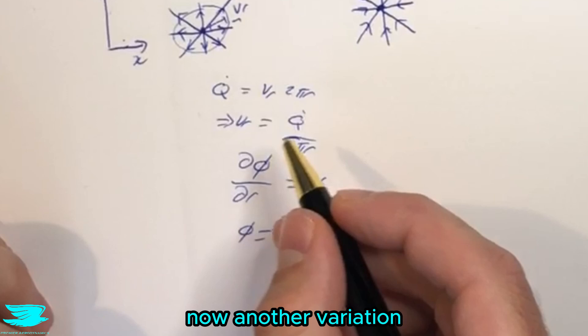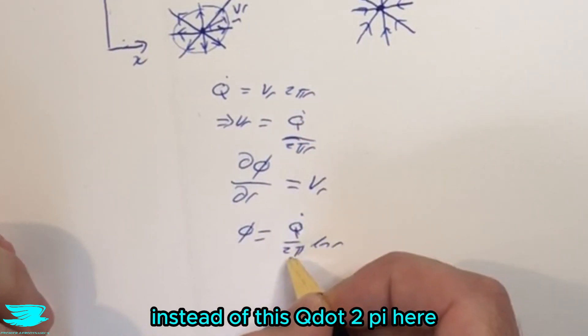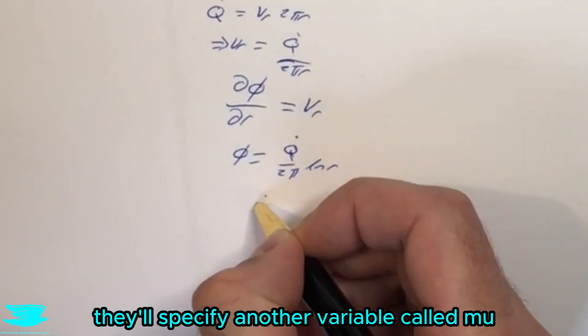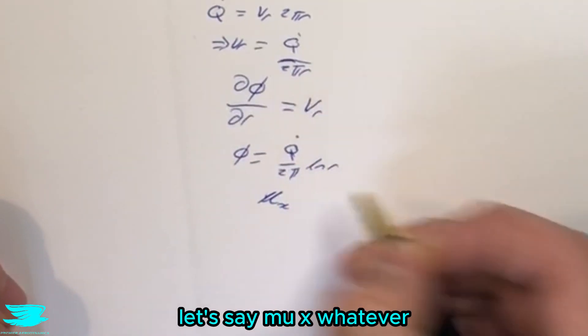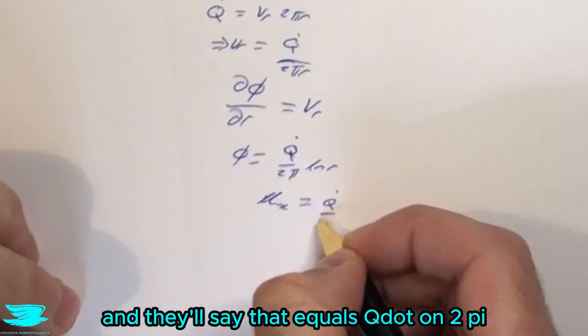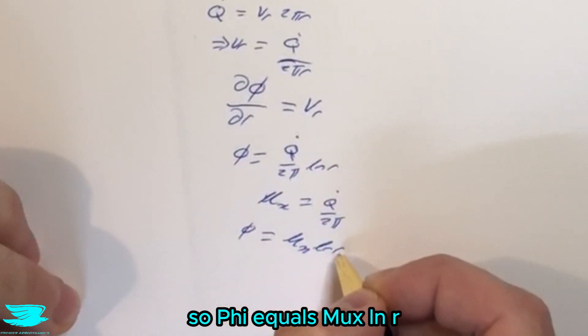Now, another variation that you will see in textbooks is sometimes instead of this q dot over 2π here, they'll specify another variable called μ, let's say μ_x, whatever, it doesn't really matter, they'll put some variable here. And I'll say that equals q dot over 2π. So φ equals μ_x times ln(r).